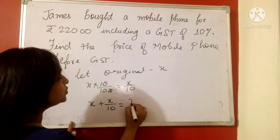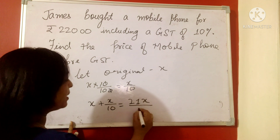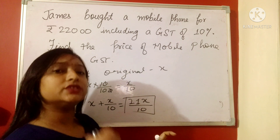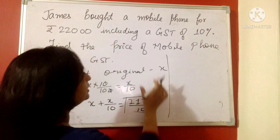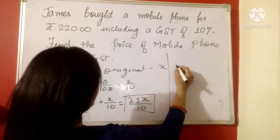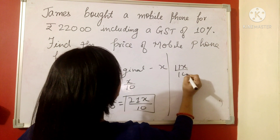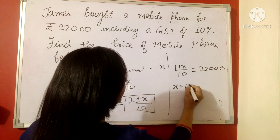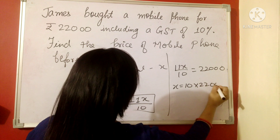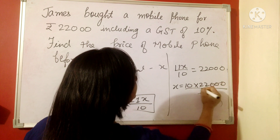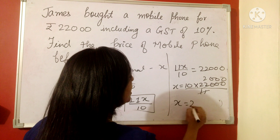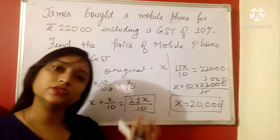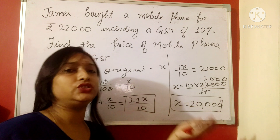Now x plus x/10 gives us 11x by 10. This 11x upon 10 is the amount which includes the GST, and that value according to the question is 22,000. We solve for x and we get x equals 20,000 rupees. That means 20,000 is the original amount before the GST was applied.